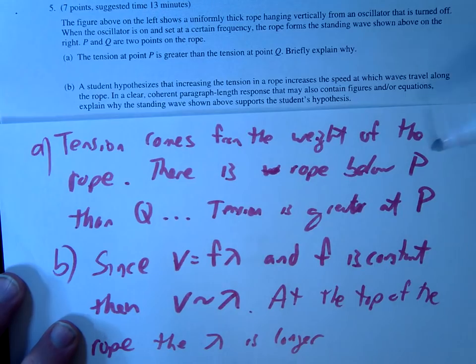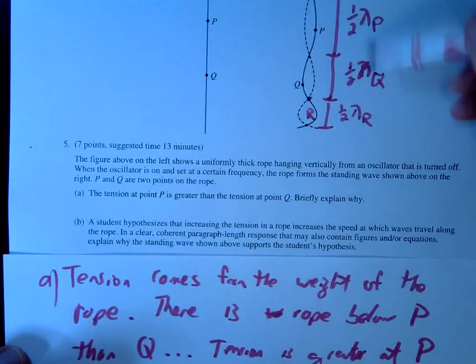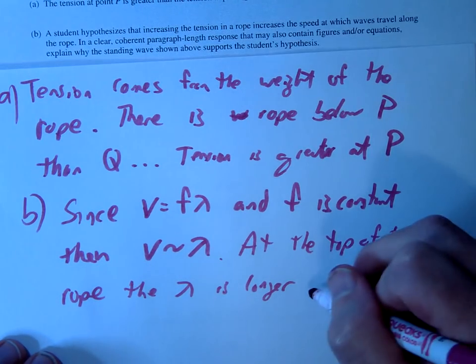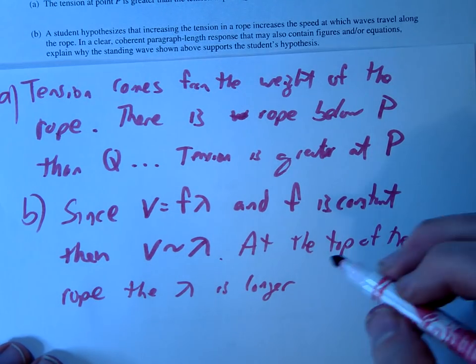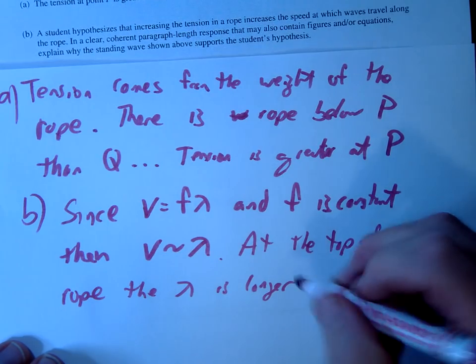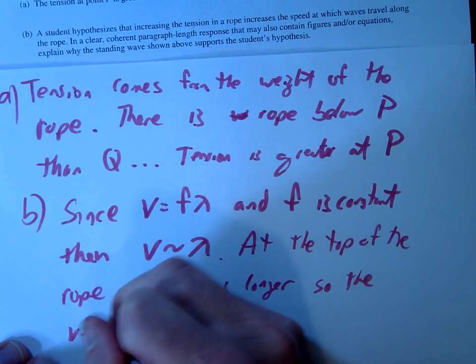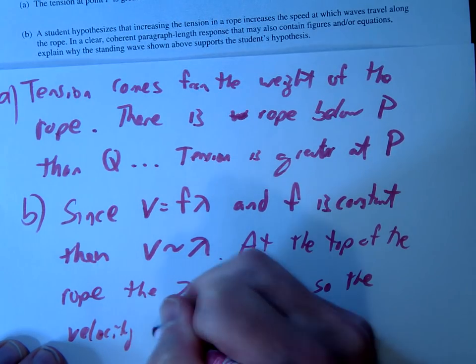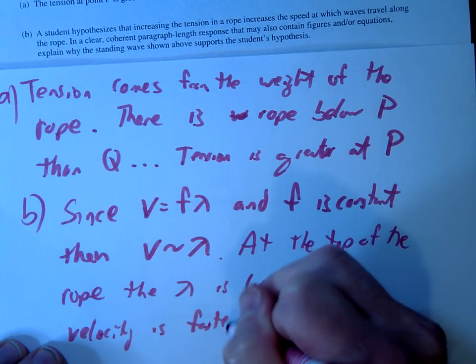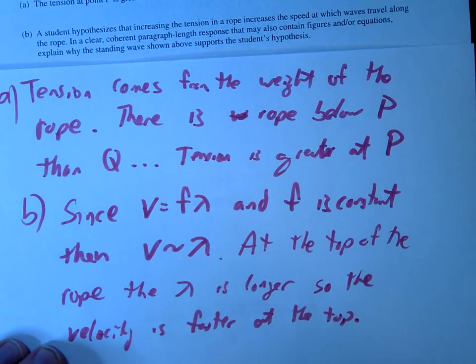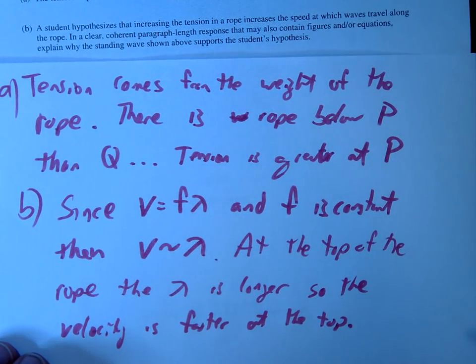At the top of the rope, the wavelength is longer, and you may want to kind of do what I just did or something like that, or you can kind of sketch that out here. The wavelength is longer, so the velocity is faster at the top.